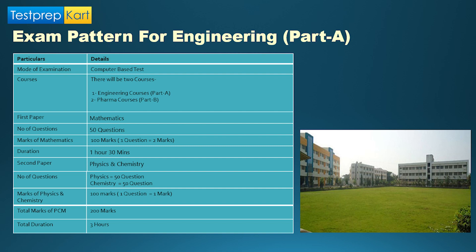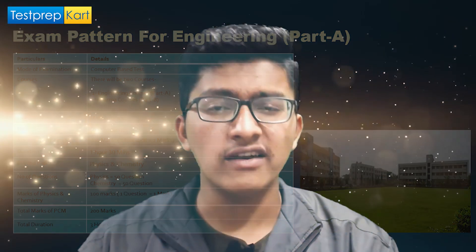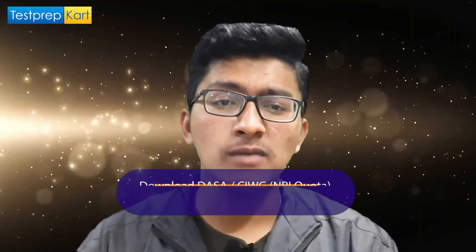The second paper is Physics and Chemistry combined. It consists of 50 questions from Physics and 50 from Chemistry, with each question carrying one mark, totaling 100 marks. So for the PCM or engineering group, the total marks are 200 — 100 for Mathematics and 100 for Physics and Chemistry. The total time is three hours: one and a half hours for each paper.